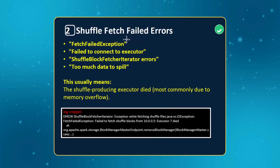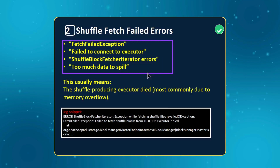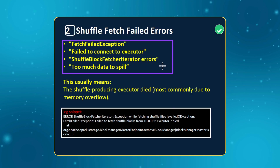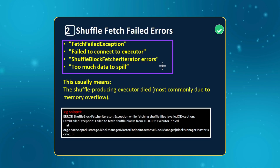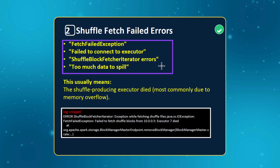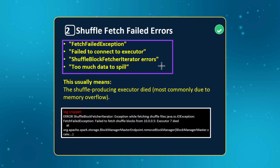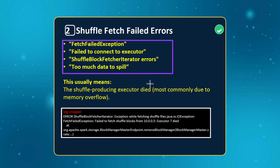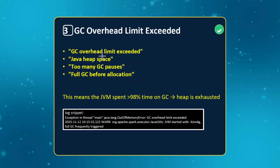The next thing is shuffle failed errors. If you see these kinds of error messages or exceptions in your log files, they can mostly be related to out of memory. When any shuffling is happening it has two components — shuffle writers and shuffle readers. If there is any issue with memory when trying to read or write data, it can cause this kind of issue. Sometimes you would see in the error logs that a particular block of data was missed in the shuffling process. To solve this, you need to increase your memory.